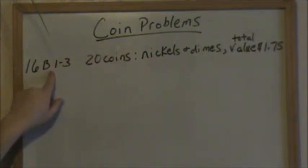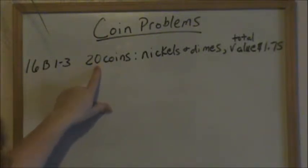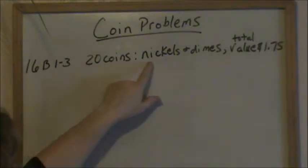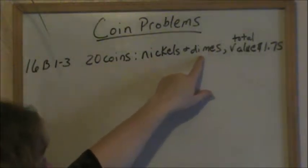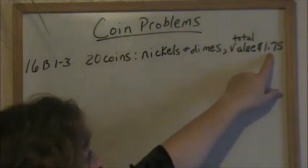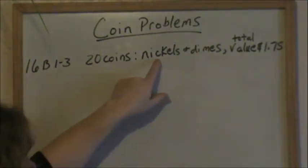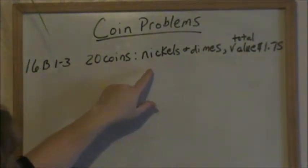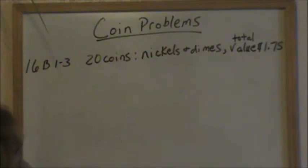If you look at 16B, 1 through 3, we have 20 coins, and we are told that those coins are made up of nickels and dimes, and the total value of the coins is $1.75. It asks us how many nickels and how many dimes do we have.